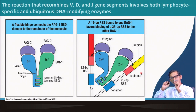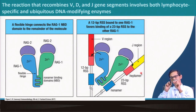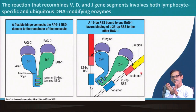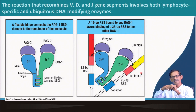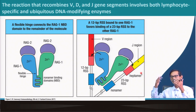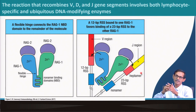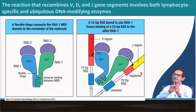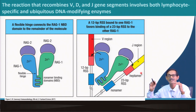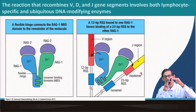But terminal deoxynucleotidyl transferase has a unique capacity — it can add nucleotides randomly without any template. If you give all four nucleotides — dATP, dGTP, dCTP, and dTTP — it randomly adds nucleotides. If you give only A, it will continuously add A. It adds to the 3-prime end of DNA, since DNA synthesis normally proceeds 5-prime to 3-prime.